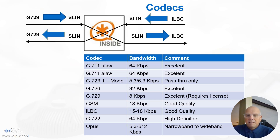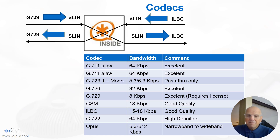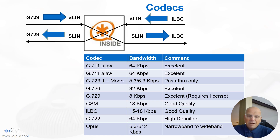Lately I've seen more focus on high-quality codecs. Thinking about AI and artificial intelligence, the quality of the voice is now much more important than bandwidth. In modern networks, getting a 1 Gigabit circuit is very easy, so 64 kbps is nothing.